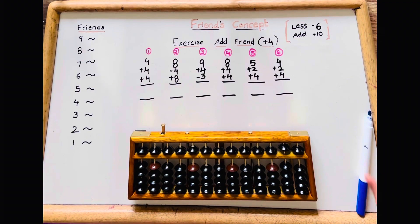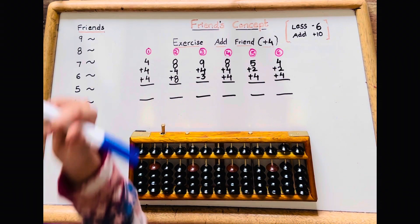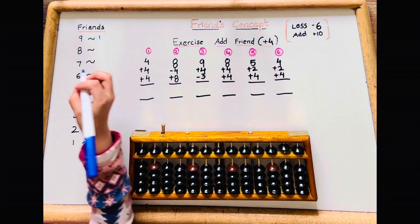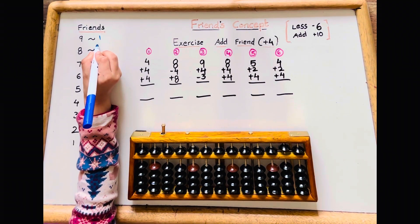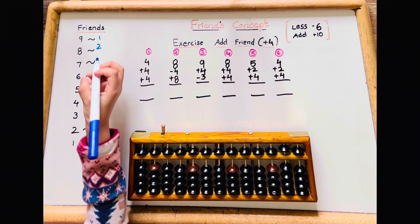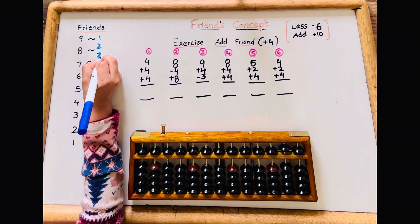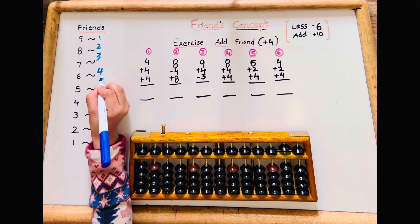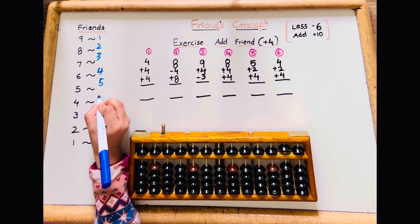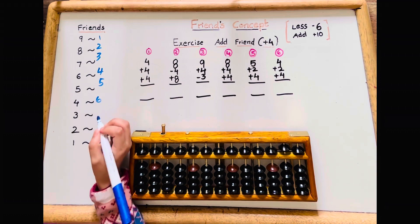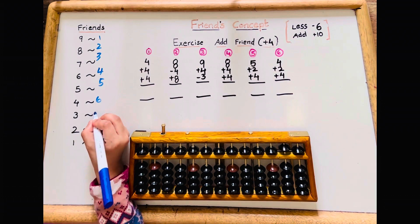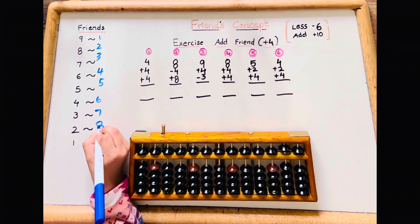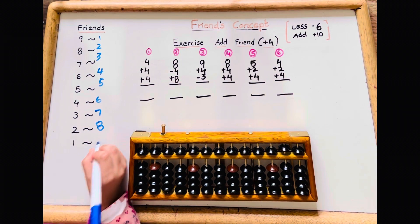I'll write down friends first. 9th friend is 1. 6th friend is 2. 7th friend is 3. 6th friend is 4. 5th friend is 5. 4th friend is 6. 3rd friend is 7. 2nd friend is 8. 1st friend is 9.